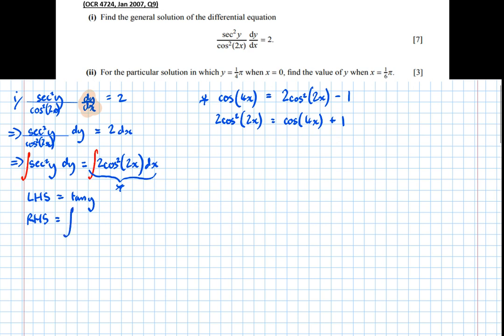So the right hand side is the integral of 2 cos squared of 2x dx, which is equal to the integral of cos of 4x plus 1 dx, which is equal to a quarter sine of 4x plus x. Again, there's a plus c, but we'll deal with that in just a second.